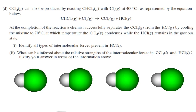The last part: carbon tetrachloride can also be produced by reacting CHCl₃ with Cl₂ at 400 degrees, giving CCl₄ plus HCl. At the completion of the reaction, the chemist separates these two gases by cooling the mixture from 400 down to 70 degrees. At that temperature, the CCl₄ condenses while the HCl gas remains in the gaseous state.